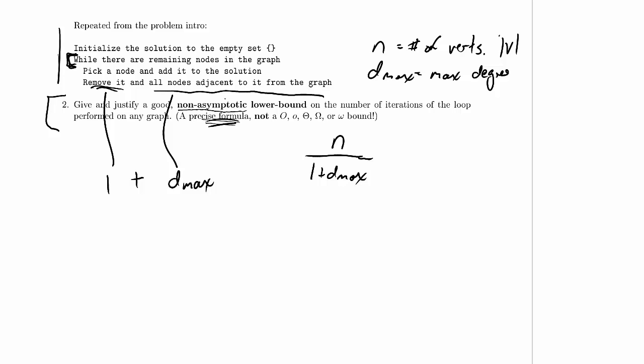So let's say that D max is 4, example D max equals 4, and let's say that I have six nodes in the graph, n equals 6.